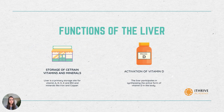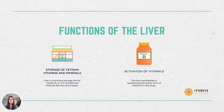The next function of the liver is the storage of certain vitamins and minerals. In addition to storing glycogen — the stored form of glucose — the liver is the prime storage organ for certain vitamins like A, B12, and minerals like iron and copper. These are released from the liver whenever needed elsewhere in the body.